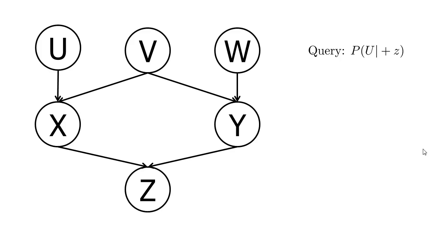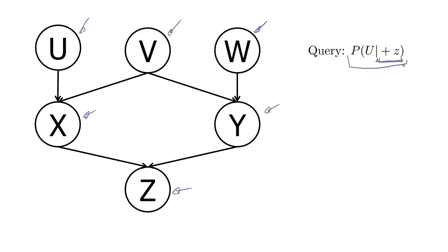Here's our first Bayesian network. It has six variables: U, V, W, X, Y, and Z. We're going to look at variable elimination for the query: what's the probability distribution for the random variable U conditioned on having observed Z being plus Z?